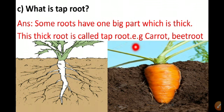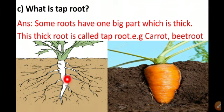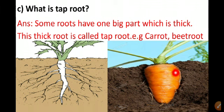Examples of tap roots are carrot and beet root. You can see here this is a radish, which is very thick and stores much food for the plant. This is a carrot, also very thick. Tap roots are big and they store much food for the plant.